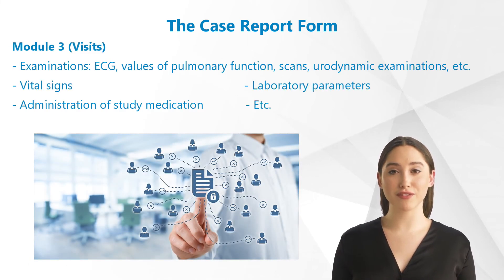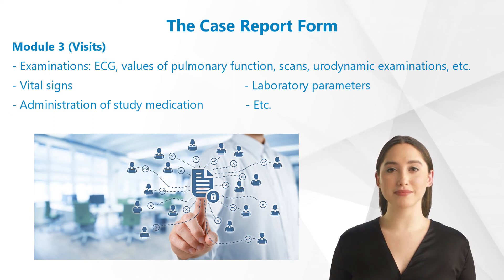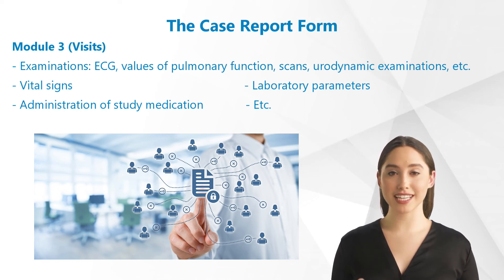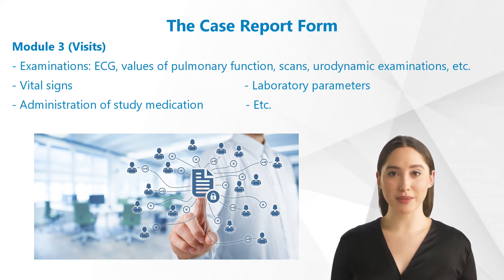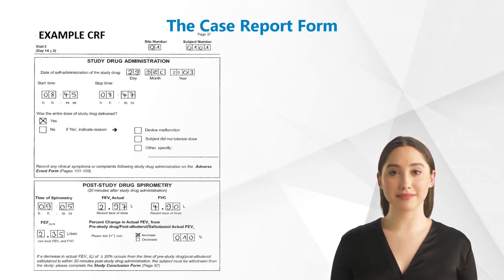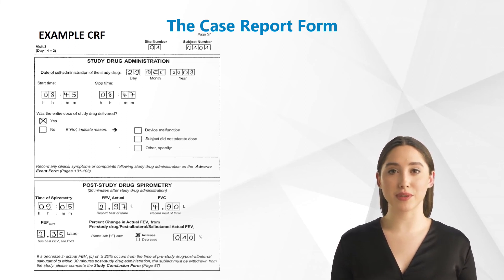Module 3 of the CRF refers to visits. As in Module 2, the results of investigations such as ECG, lung function tests, scans, urodynamic examinations, etc., are recorded. Vital signs and laboratory parameters are also once again documented and the administration of study medication noted. In this module, the development of therapeutic success is measured by continually comparing target criteria with baseline parameters — this is the job of the data management. For example, in an asthma study, spirometry is conducted regularly to compare the spirometric parameters with those of the baseline visit, observing any improvement.